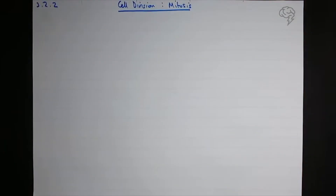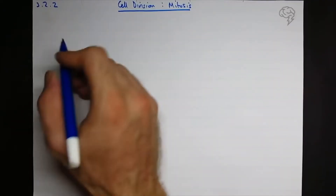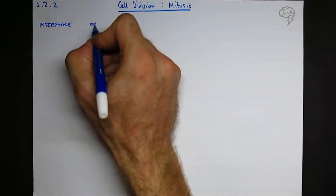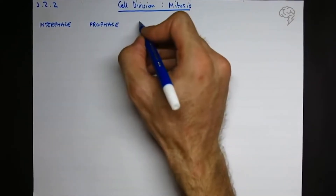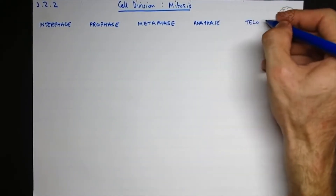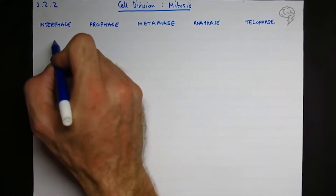Cell division - mitosis. This is a shortcut, abbreviated, very few words explanation of mitosis. There are four phases of mitosis. I'm also going to include the first diagram to include interphase. I'm going to write in my stages across the top: interphase, then the first stage of mitosis is prophase, then we have metaphase, anaphase, and finally telophase.